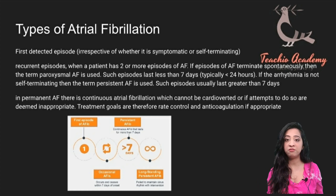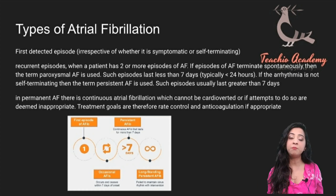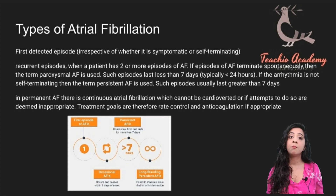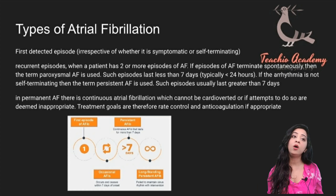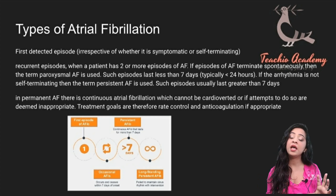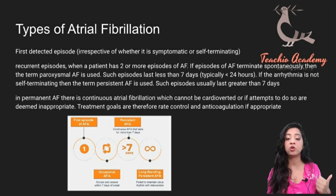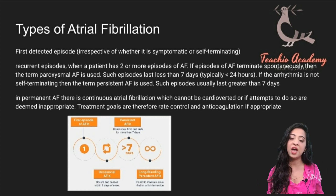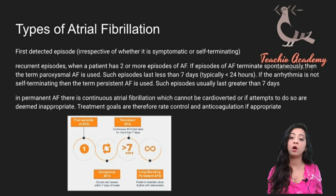If the arrhythmia is not self-terminating and the patient doesn't flip back on their own, we use the term persistent AF, which typically lasts greater than seven days. Permanent AF is when you cannot use a rhythm control strategy, or attempts at rhythm control are inappropriate or unsuccessful. In these situations, you have to use rate control and anticoagulation. Permanent AF basically means the doctor has to deal with the patient's AF as something which cannot be corrected.